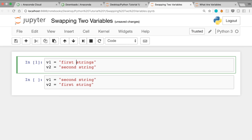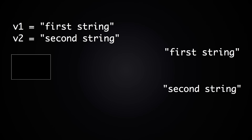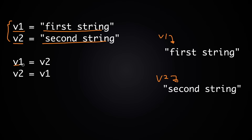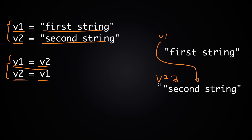Think about how to solve this without repeating the strings. You might say: just write v1 = v2, then v2 = v1, and we're done. But actually this solution is wrong. When we execute v1 = v2, v1 now refers to whatever v2 refers to, which is 'second string.' Then when we write v2 = v1, v2 will now refer to what v1 refers to now — which is also 'second string.' So at the end, both v1 and v2 refer to 'second string,' which is not what we want.